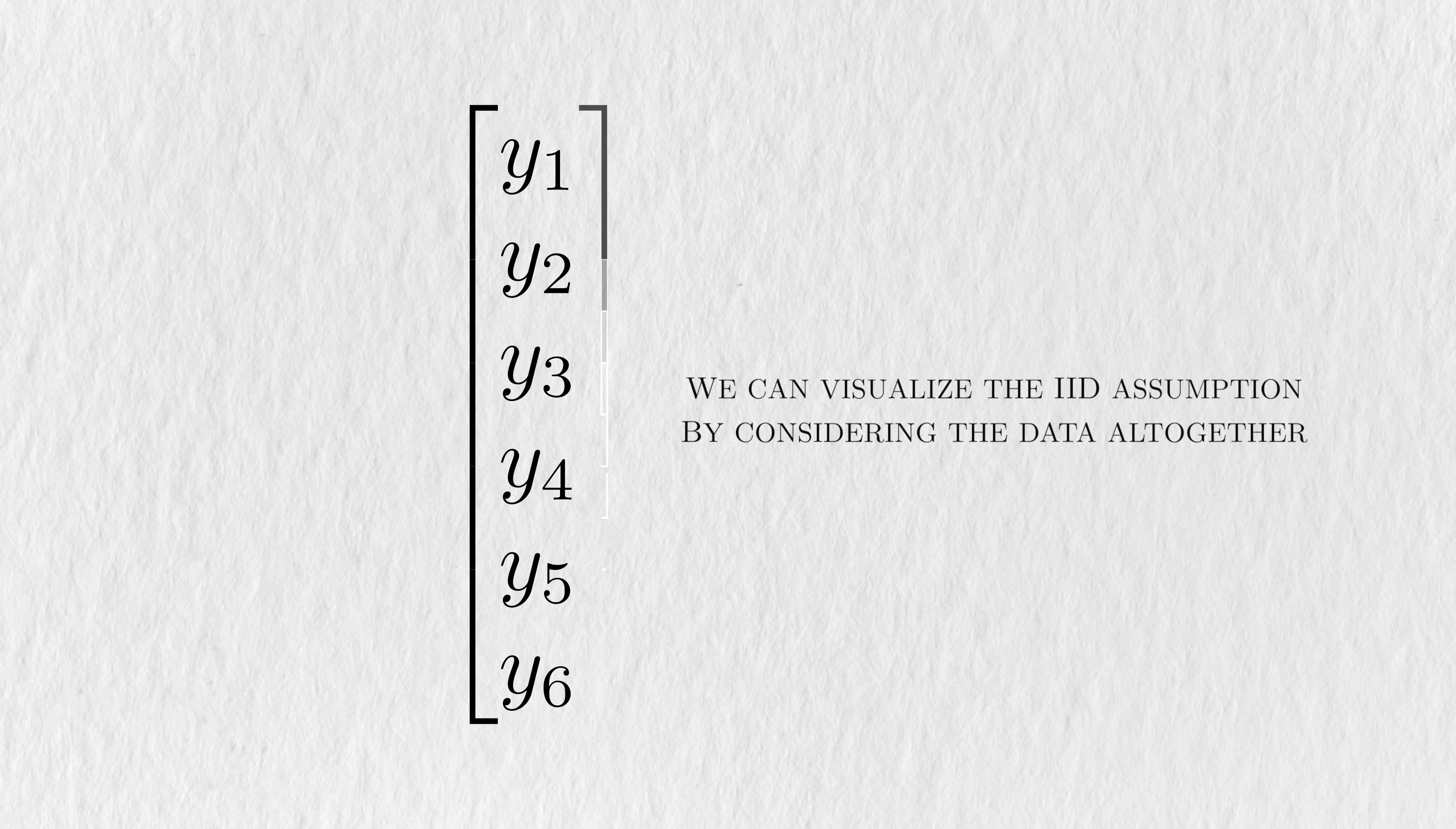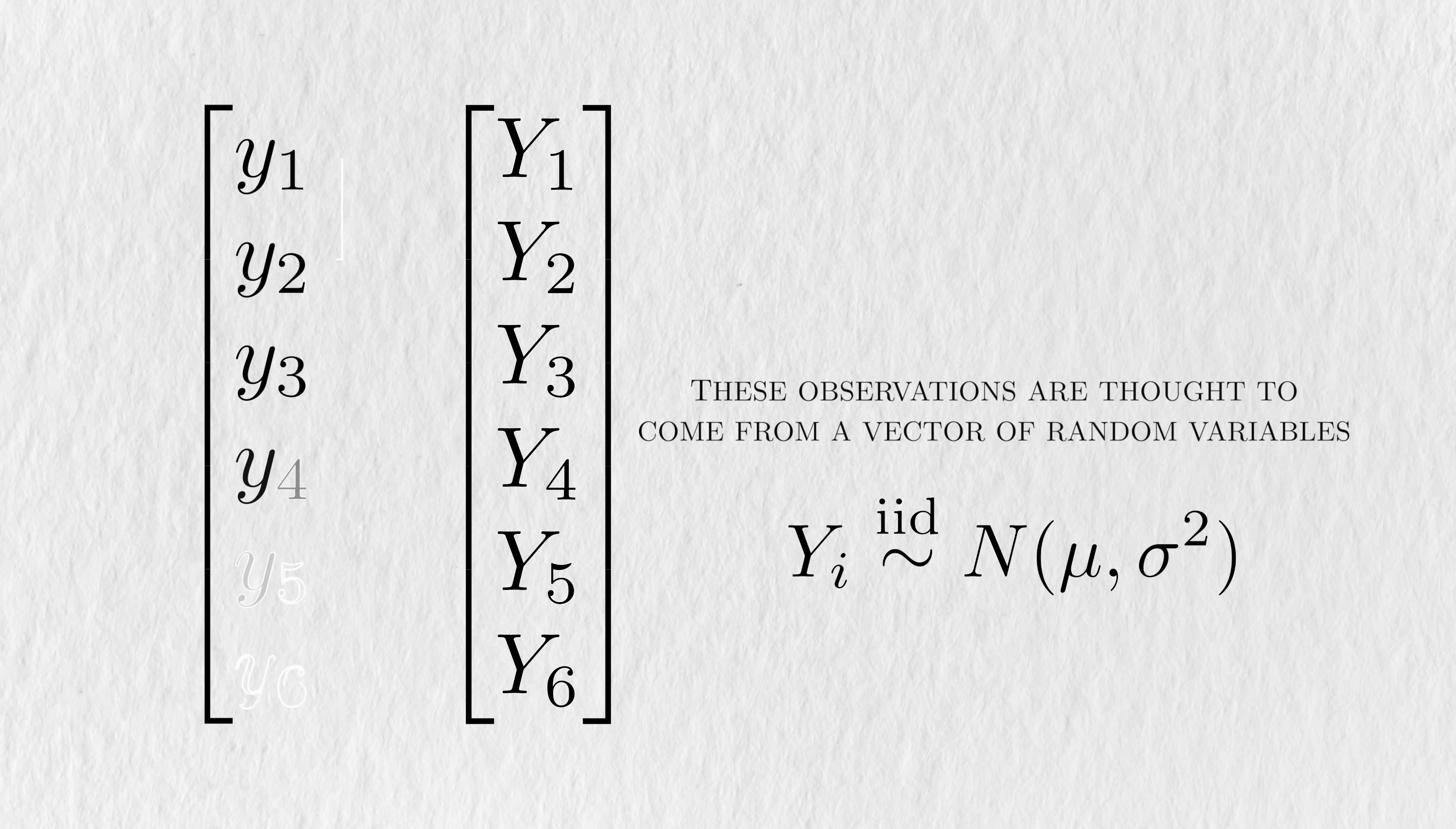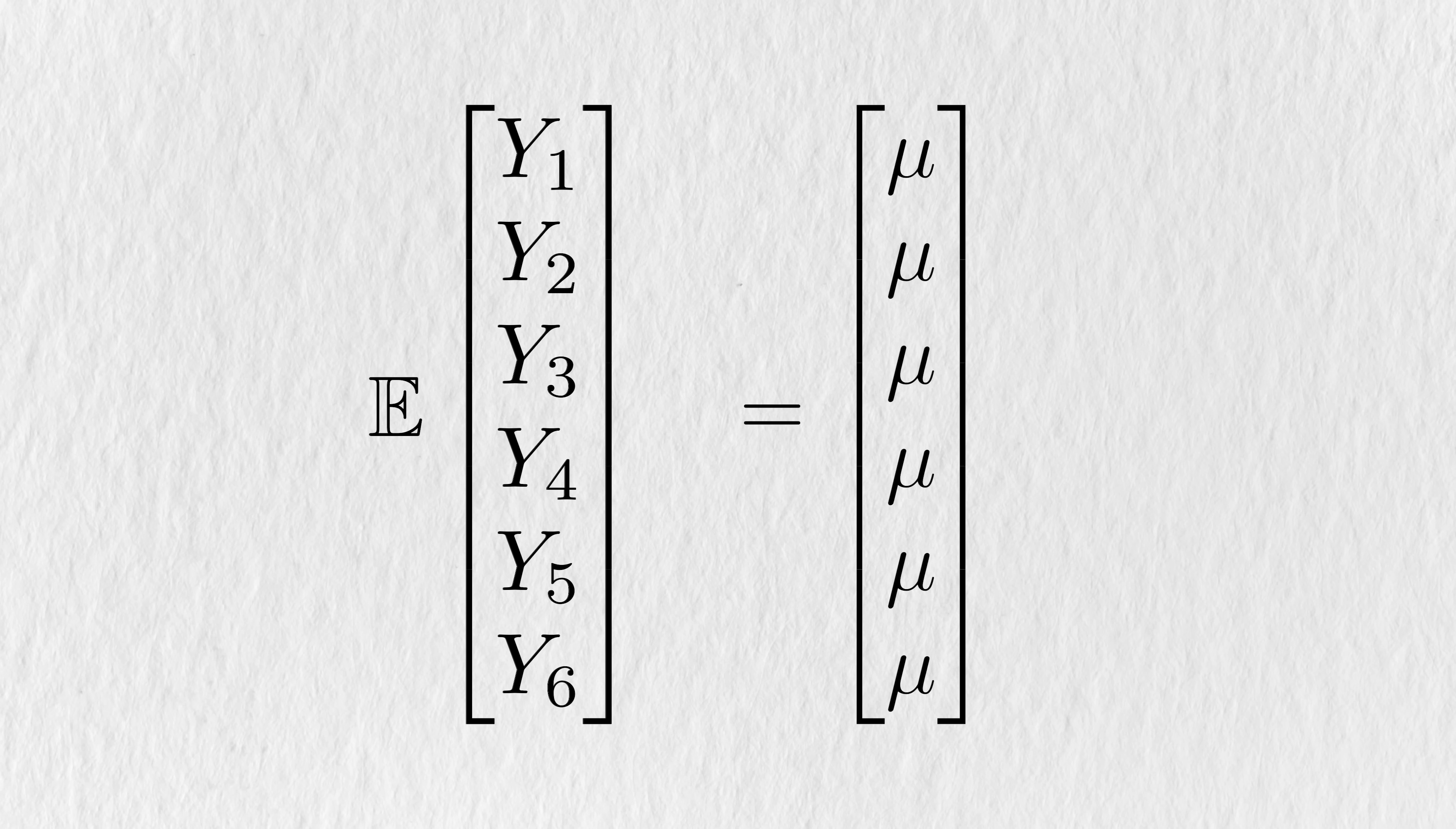One way to visualize the IID assumption is to stack the data into a vector. Using the y notation from earlier, we'll get a column vector with six elements, where each element represents one observation from each person. By convention, since these data are already observed, we write them as lowercase y. But remember that we also assume that all of these observations each come from a normal distribution. So we can think of the observed data as a realization of these normal variants. You might be used to doing operations on each of the observations one by one, but it's also completely valid to talk about the dataset in its entirety. If we wanted to take the mean of this vector, this is the same as taking the expectation of each of the elements in the vector and putting them in their own column vector. Since all of the data come from the same normal distribution, we just get a vector with all the same mean values mu.